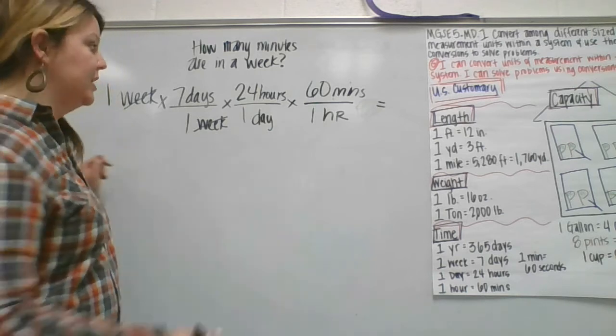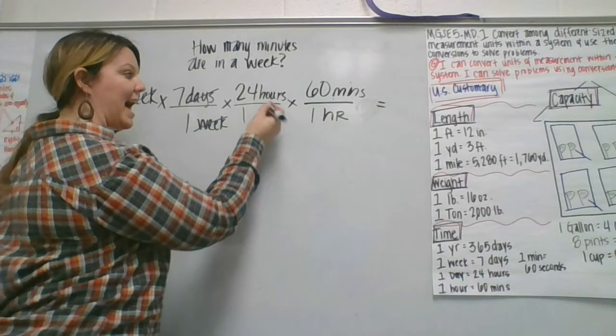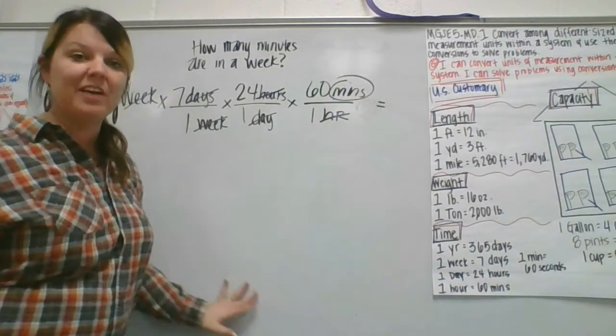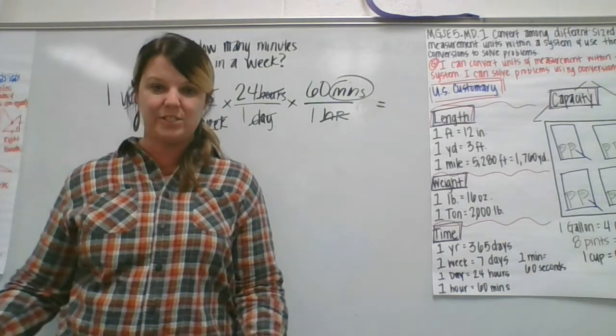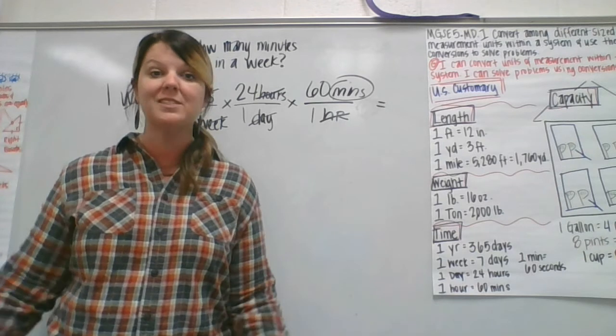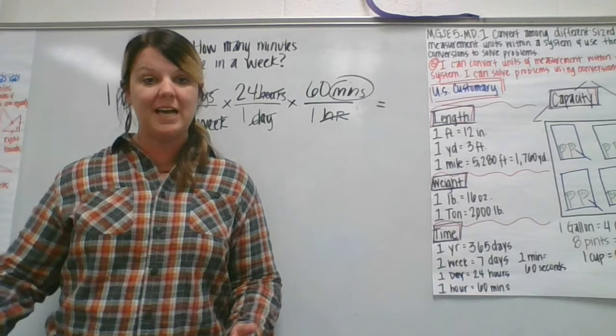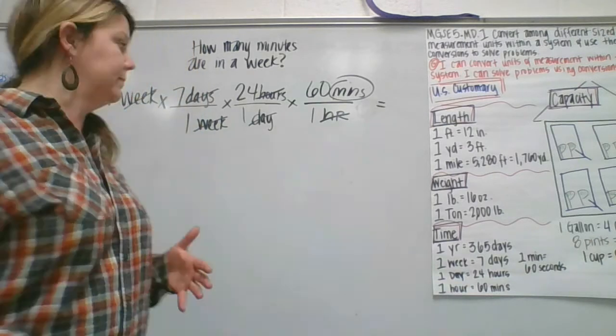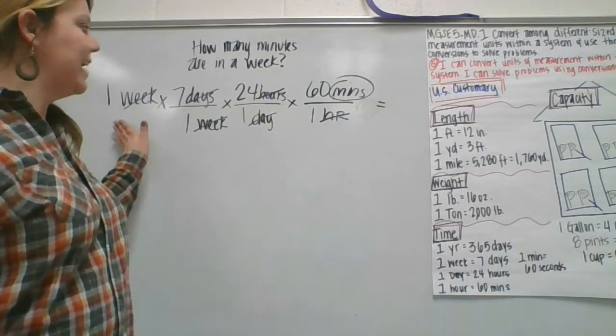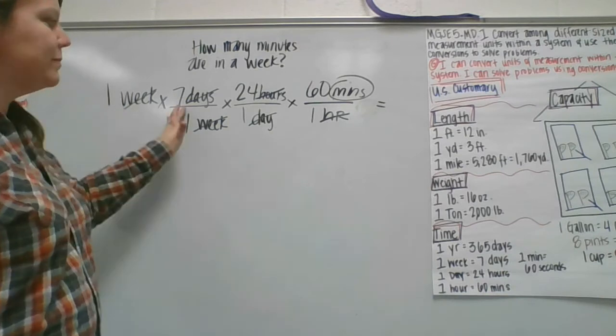So then days are going to cancel itself out. Hours would cancel themselves out. And I would be left with minutes, which is the unit of measurement that I'm trying to get to. Now, are all of your conversions going to have four steps or five steps like this? No. But you will continue to see this in mathematics as you get into high school and greater levels of difficulty. So now all I have to do is work this out to get from hours to minutes. So I need to do one times seven. That's seven.